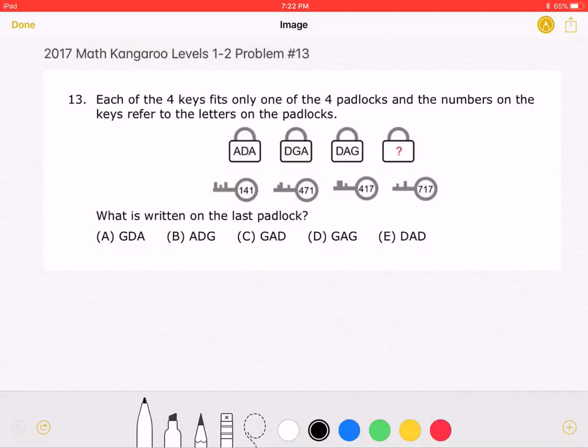A: GDA, B: ADG, C: GAD, D: GAG, or E: DAD. Let's start by looking at the first padlock.